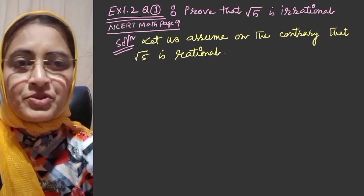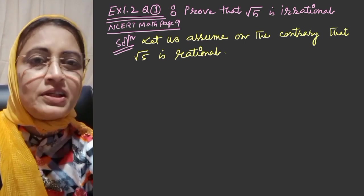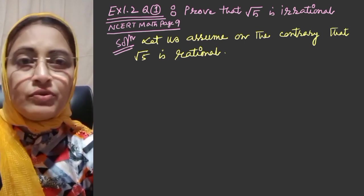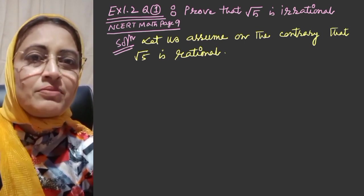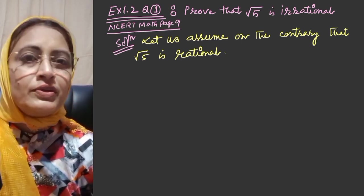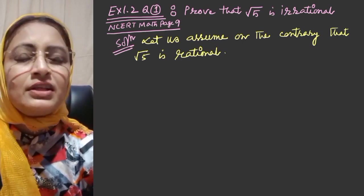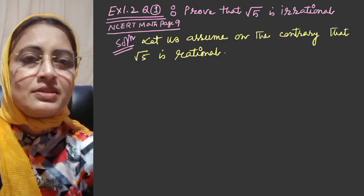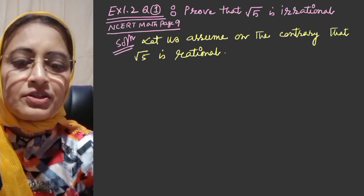If we solve and the properties are not fulfilled by a rational number, then we'll say that no, it can't be a rational number, it is an irrational number. This is called the method of contradiction.